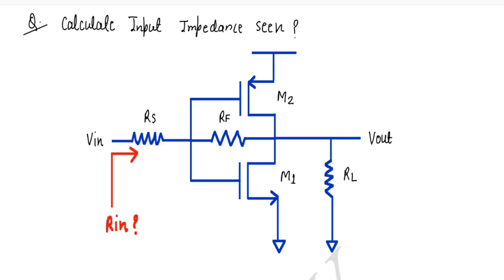Hello everyone. In this video we will calculate input resistance seen from the input side. This is a basic inverter we can use as an amplifier circuit. We have used one RF feedback resistance, RS as source resistance, and there is one load resistance RL at the output.